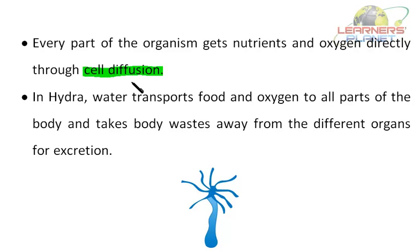Cell diffusion is also the movement of molecules from a region where they are highly concentrated to a region where they are less concentrated. It depends on the motion of the molecules and continues until the system reaches a state of equilibrium, meaning the molecules are randomly distributed throughout the system. Every part of the organism gets nutrients and oxygen directly through cell diffusion.